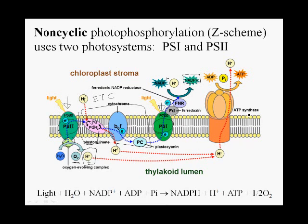In the process, we have generated a proton motive force across the membrane. Just like we saw with oxidative phosphorylation, in chloroplasts across the thylakoid membrane, we have an ATP synthase which is very similar to the mitochondrial ATP synthase. And just like the mitochondrial ATP synthase, the proton motive force drives ATP synthesis.